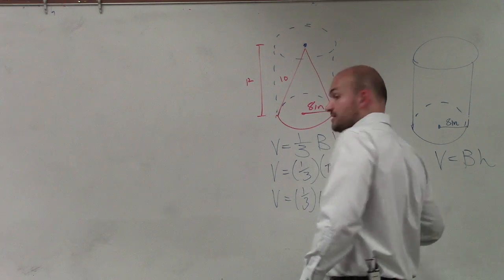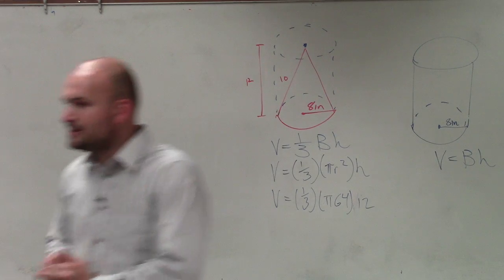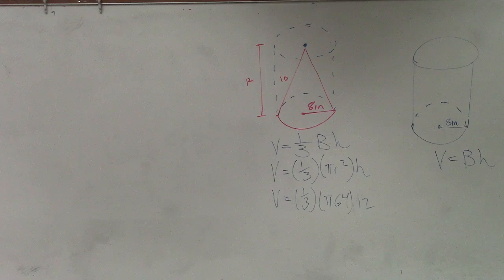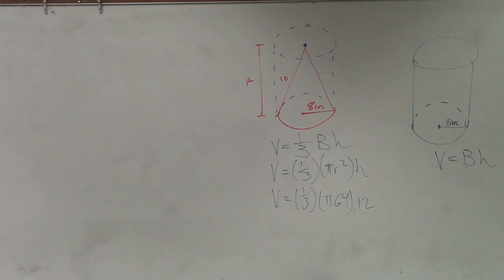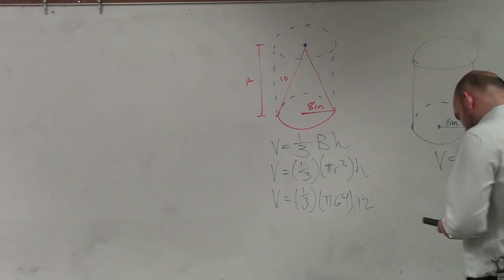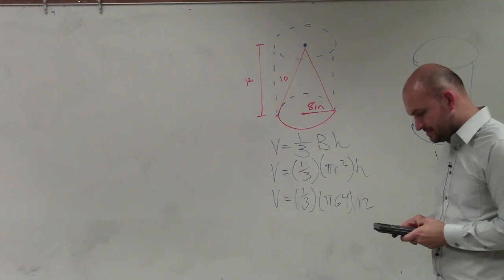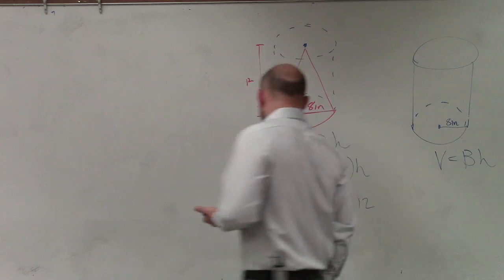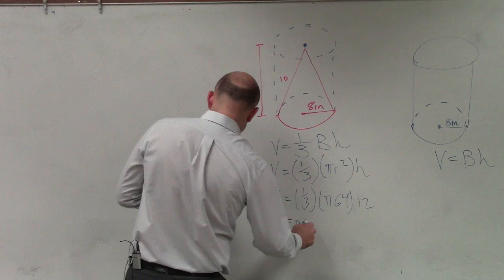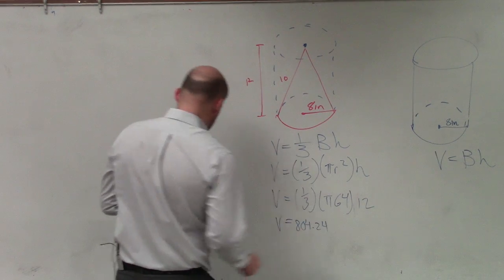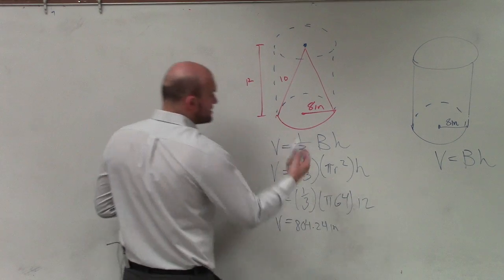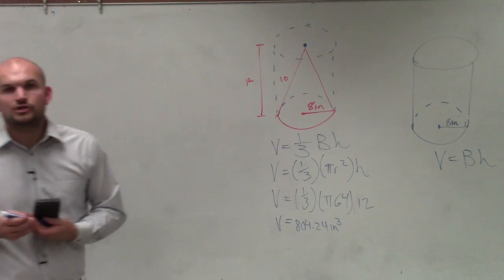And then if somebody didn't steal my calculator, let's see, I found it because I have a little thief here. So now I multiply this. So therefore, I just take 1 divided by 3 times pi times 64 times 12. And therefore, I have volume equals 804.24. And remember, we are dealing with inches. And since we're dealing with volume, that's going to be inches cubed.